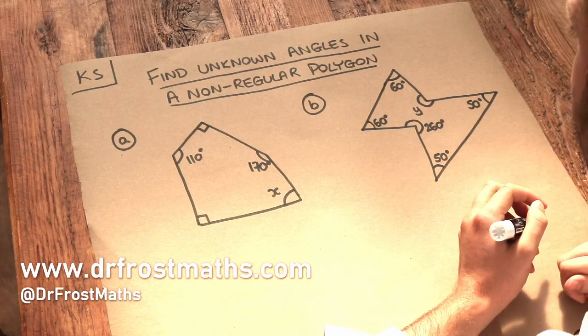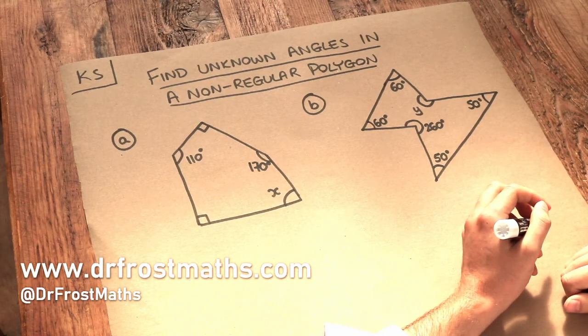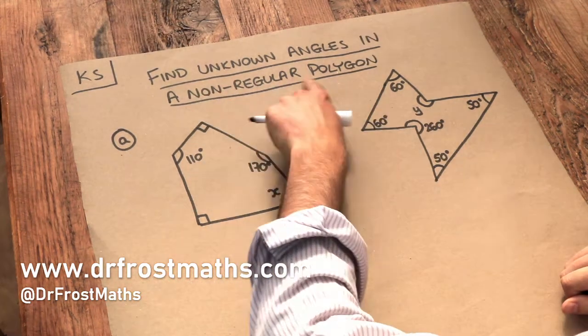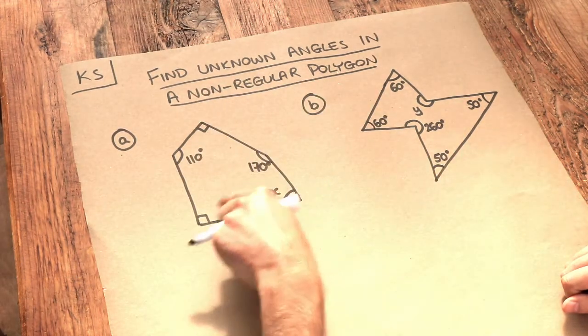Hello and welcome to Dr. Ross Mass's key skill video on finding unknown angles in a non-regular polygon. A polygon is non-regular if the angles aren't all the same.